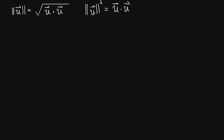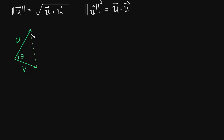The more interesting thing that happens has to do with the angle between two vectors. Let's say this is u and this is v and this is theta. What if we did u minus v? We already talked about what u minus v is — it's the vector that points from v to u. We've drawn a triangle here, and we can use the law of cosines to figure out this angle or this side, u minus v.